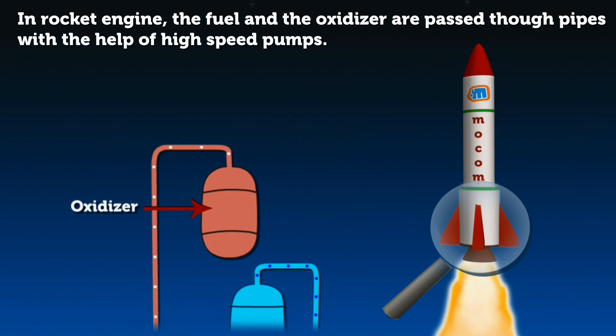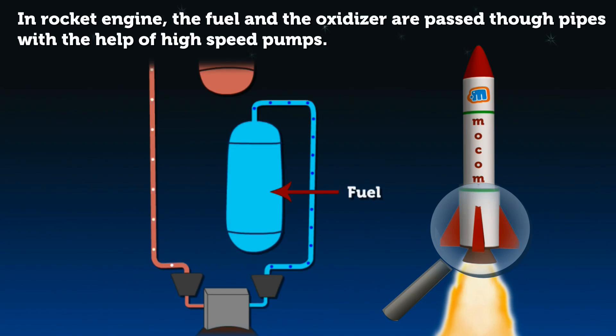In a rocket engine, the fuel and the oxidizer are passed through pipes with the help of high-speed pumps.